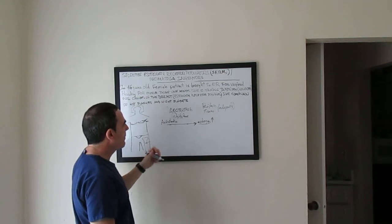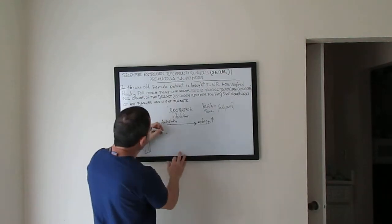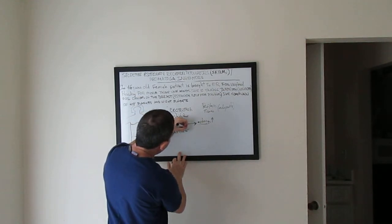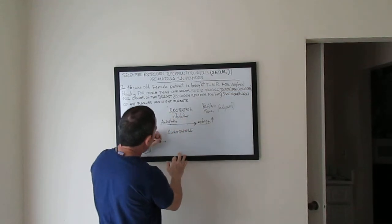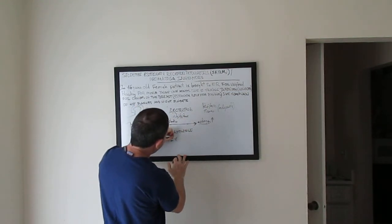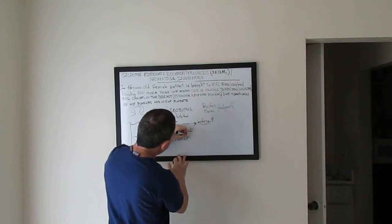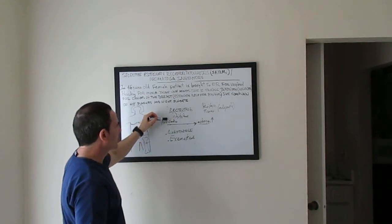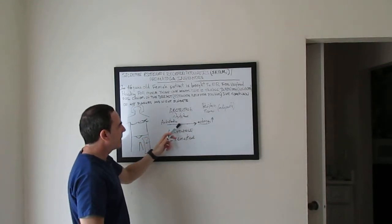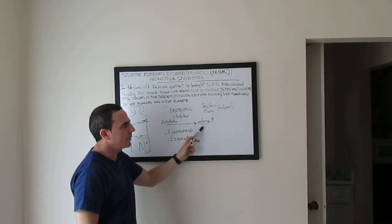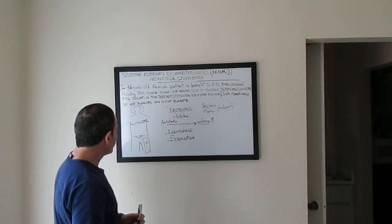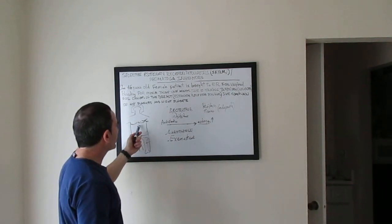For example, anastrozole and exemestane are examples of aromatase inhibitors. Remember, aromatase inhibitors block the conversion of androstenedione to estrogen in peripheral tissue. This is very important in the treatment of breast cancer.